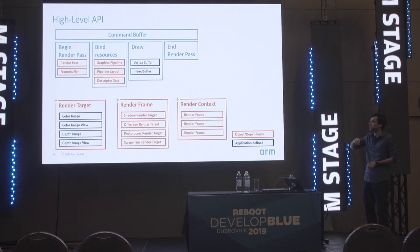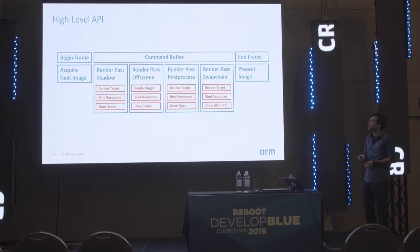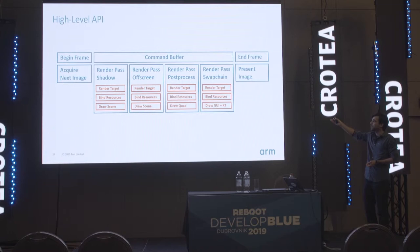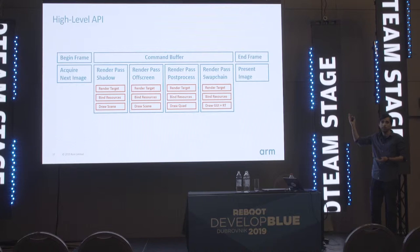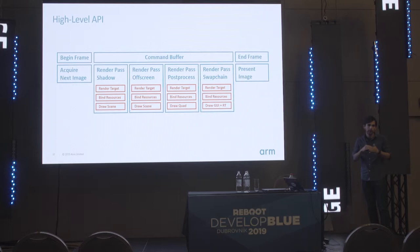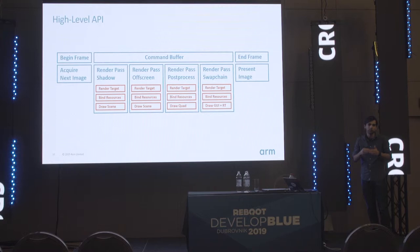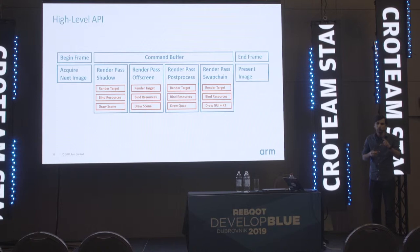We provide abstractions that combine images and image views into render targets, which make up a frame, and for a triple buffer application you have three render frames in your render context. In an example with multiple render passes performing shadows, off-screen post-processing, and final composition with the GUI, we make the sample very readable and hide away boilerplate. We also have helper functions for begin and end frame — begin frame deals with things like swap chain recreation.